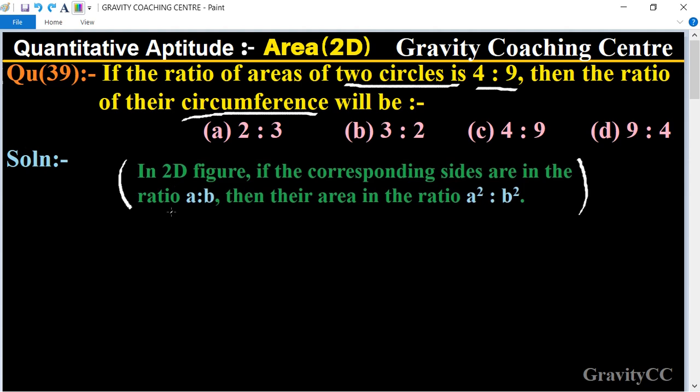The theorem to solve this question is: in 2D figures, if the corresponding sides are in the ratio a:b, then their area is in the ratio a²:b².